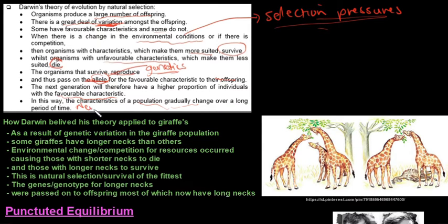And this can actually lead to the formation of a new species. This is also known as speciation. So, see there's a spelling error there. It's believed, not beloved. So how Darwin believed this theory applied to giraffes.